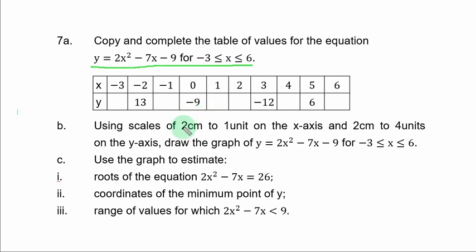Part b: using scales of 2 centimeters to 1 unit on the s-axis and 2 centimeters to 4 units on the y-axis, draw the graph of y = 2s² - 7s - 9 for -3 ≤ s ≤ 6.